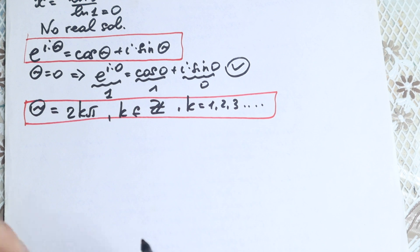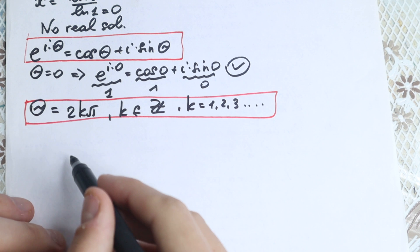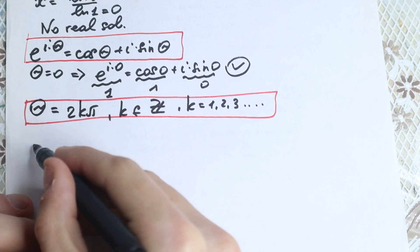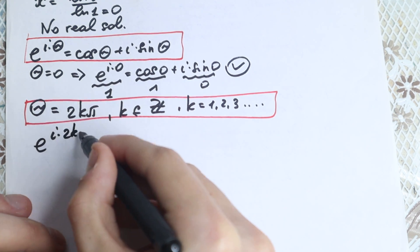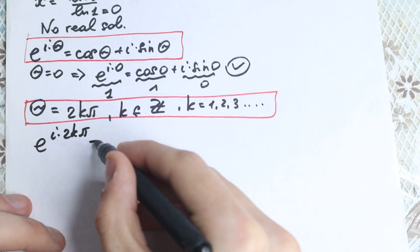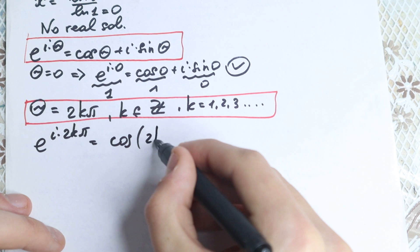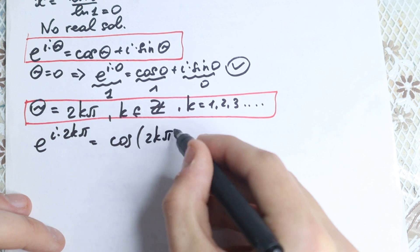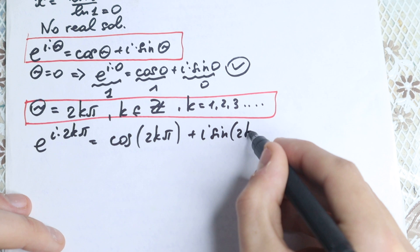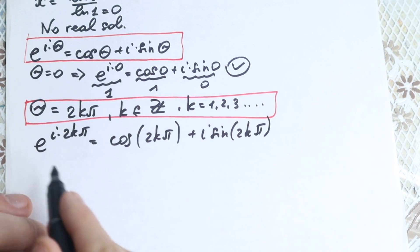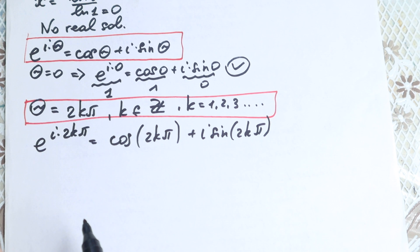Because if theta equals 2k pi, instead of the general expression we have e to the power i times 2k pi, equals cosine 2k pi plus i times sine 2k pi. We simply replace theta with 2k pi.